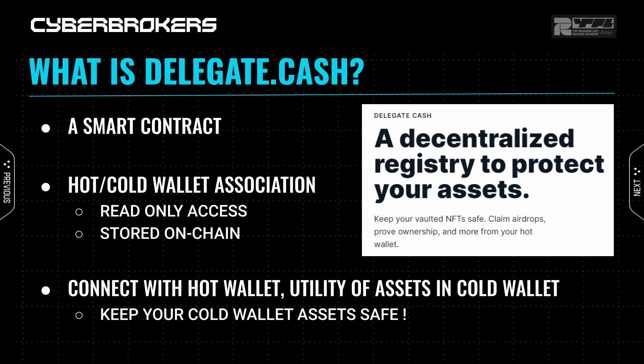The association of your hot and cold wallet gets stored on-chain. It's important to note that this does not give any access to your wallet — it's just storing two pieces of information on-chain for others to use. Using this information, anyone can then see the assets in your cold wallet when you connect with your hot wallet, while keeping your cold wallet assets safe.